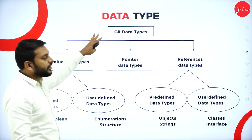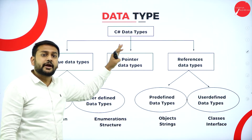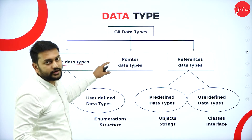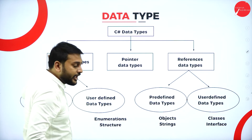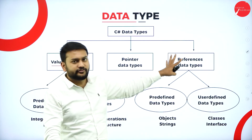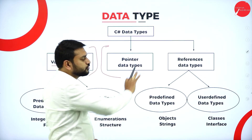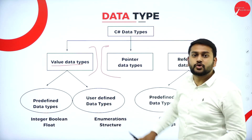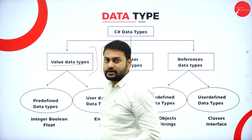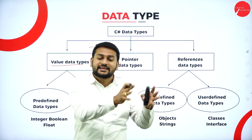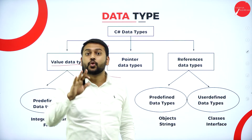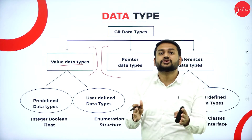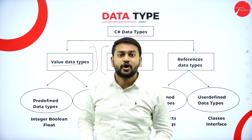In C#, data types fall into three major categories: value data types, pointer data types, and reference data types. The key difference is that value data types store values directly. Pointer and reference data types do not store values — instead they store a reference, meaning the address of where the value is actually located in memory.